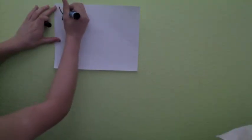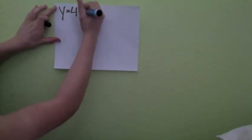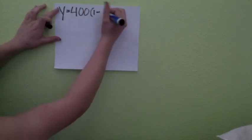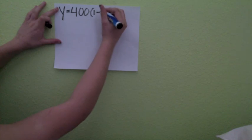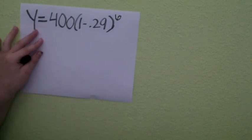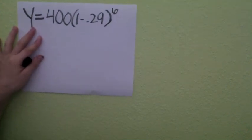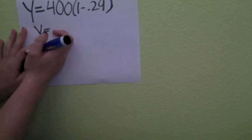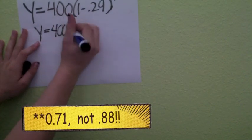We have y equals 400 milligrams times 1 minus 29%, which when converted to a decimal is 0.29, to the sixth power because the time is 6 hours. We then need to simplify this so it becomes y equals 400 times 0.88 to the sixth power.